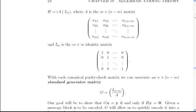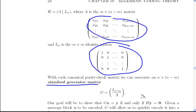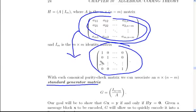That means H can be divided into two parts. The first part will have an arbitrary pattern of ones and zeros, and the last M by M block will look like an identity matrix. You can associate with this something called a standard generator matrix. Basically, you take this same leading matrix and instead of stacking it in front of an M by M identity matrix, you stack it below an N minus M by N minus M identity matrix.